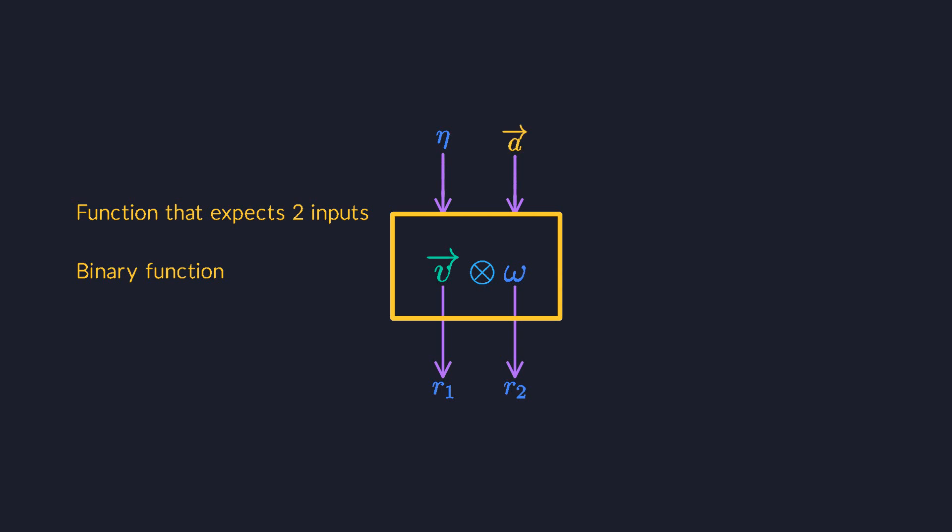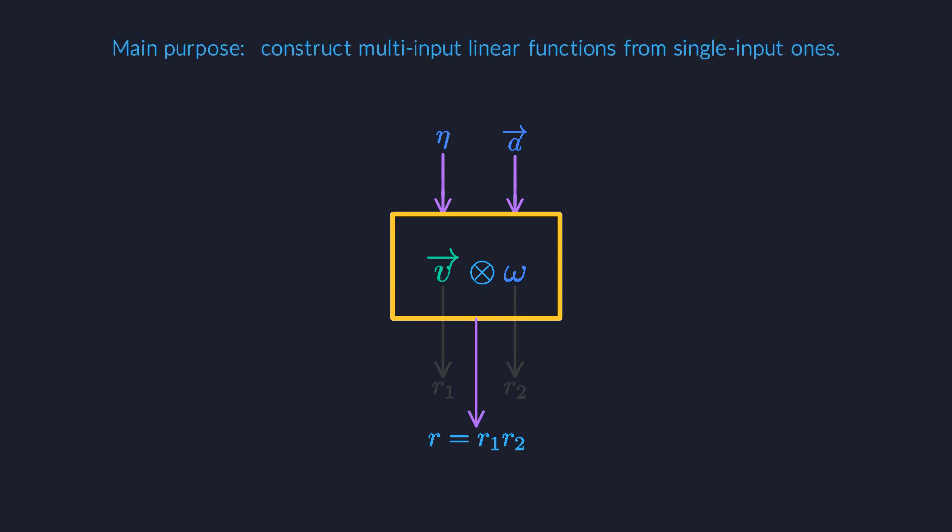It takes exactly one vector and one dual vector as input, and it produces a single real number in the end. This is what our mathematical glue is for. We use it to construct multi-input functions from single input ones. The resulting functions are always linear, just like the parts. So the summary so far is that we can create a big multi-input linear function from single input ones.